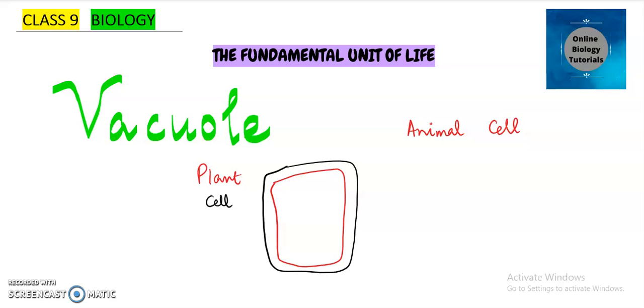Now in case of plant cell the vacuoles they are bigger and they are centrally placed. If you could observe vacuole which is being drawn by blue color this is occupying the major portion of a plant cell because of which the nucleus is at the periphery. This is nucleus and when I say periphery I mean to say that it is towards the boundary.